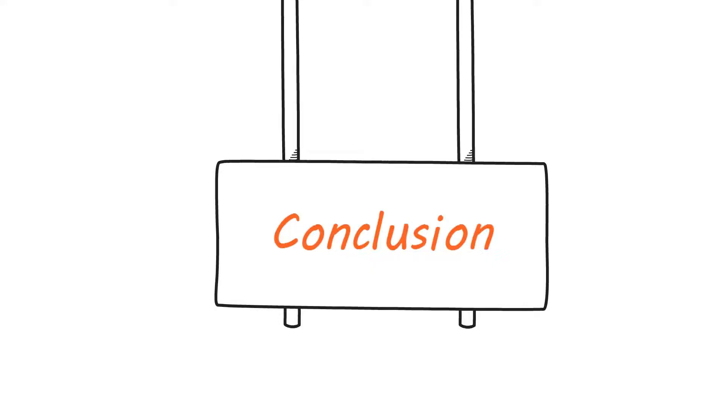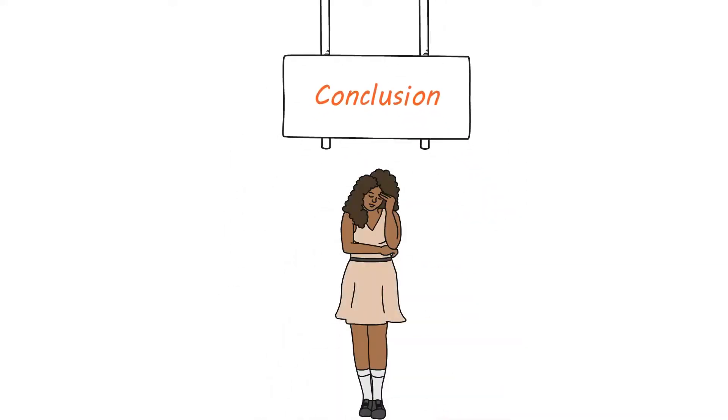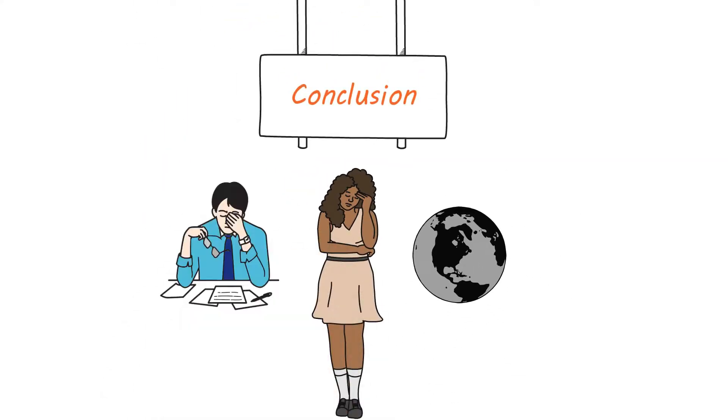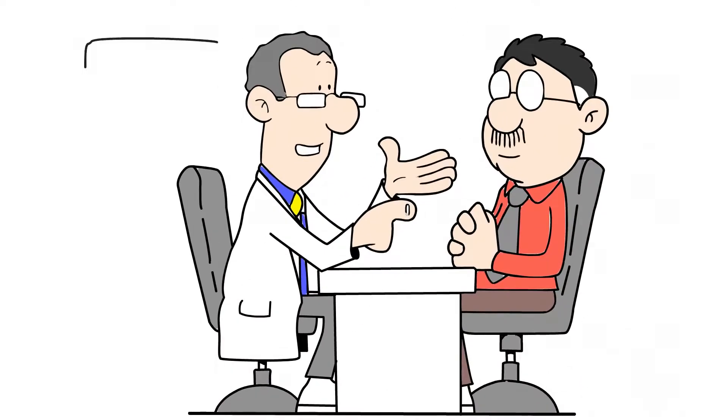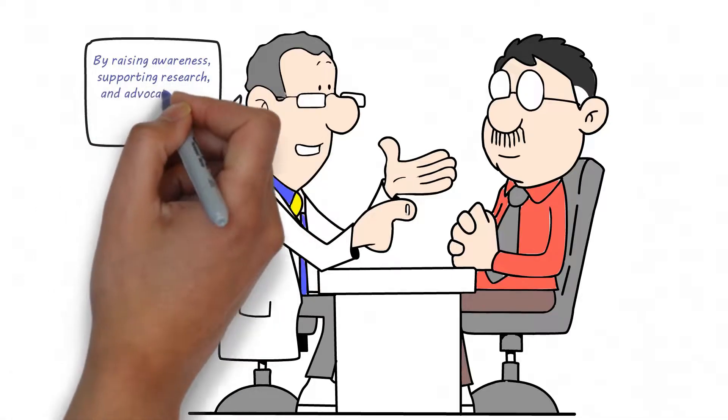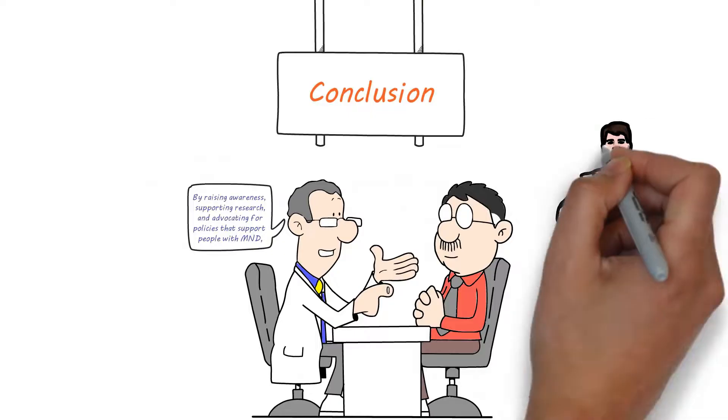Conclusion. Motor Neuron Disease is a challenging and complex condition that affects many individuals worldwide. While there is currently no cure, there are treatments and strategies available to help manage symptoms and improve quality of life. By raising awareness, supporting research, and advocating for policies that support people with MND, we can make a positive impact on the lives of those affected by this disease.